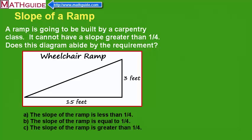If a ramp is going to be built by a carpentry class, they want the slope of this ramp to be less than or equal to one-fourth. So it cannot have a slope greater than one-fourth. So the question is, does this ramp in this diagram abide by the requirement of it being no greater than one-fourth?